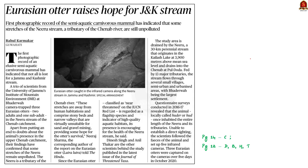The next news article talks about a 30-kilometer perennial stream named Neeru Stream. This stream originates in the Kailash Lake at 3,900 meters above mean sea level and drains into Chenab at Pultoda. For the first time, a photographic record of three Eurasian otters has been found in this Neeru stream. Eurasian otters are indicators of high quality aquatic habitats, so this means the Neeru stream is a high quality aquatic habitat. The presence of Eurasian otters reflects the health of the Neeru stream. The stream is away from human habitations, which naturally provides some hope for the survival of otters.